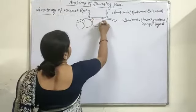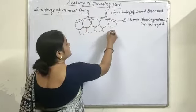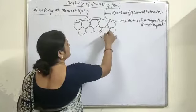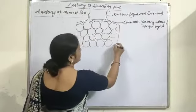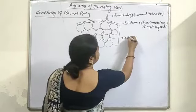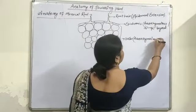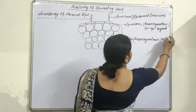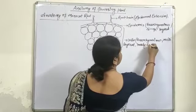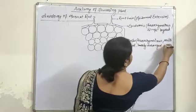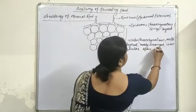We can draw these parenchymatous cells like this, with all cells enclosing the intercellular space between them. This is the entire region of the cortex. This cortex is parenchymatous, multi-layered, loosely arranged, and intercellular spaces are present.